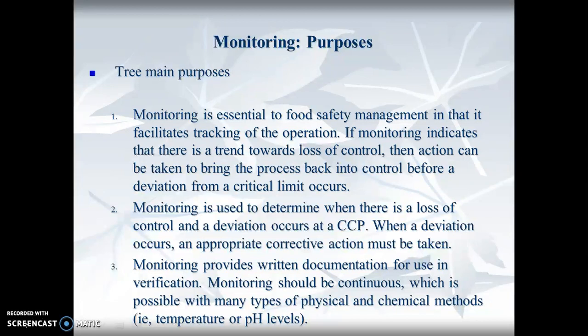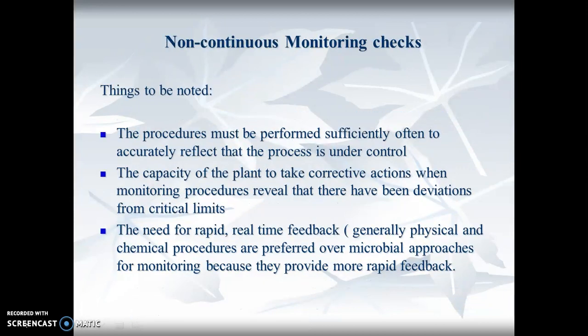Monitoring is used to determine when there's a loss of control and a deviation occurs. It helps you understand that you need to take corrective actions. Monitoring provides written documentation for use and verification. You may need to prove that your cooking mechanism or oven did get to that temperature and it stayed there for a long enough period of time.